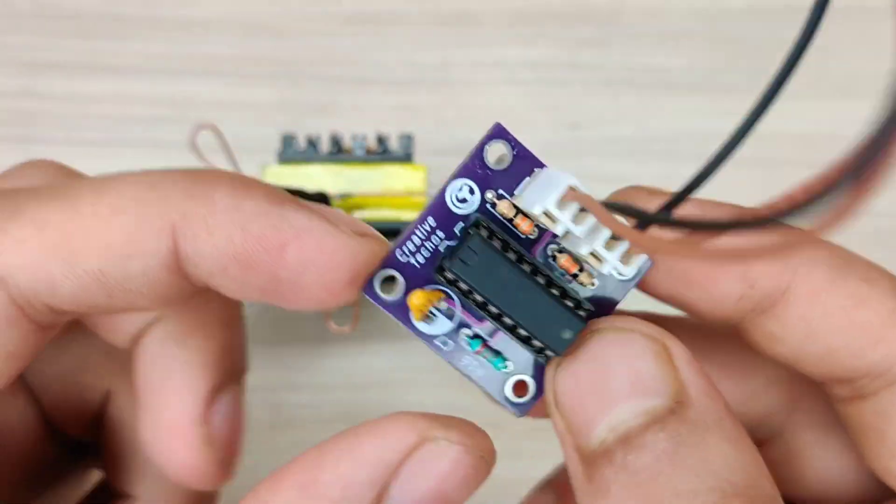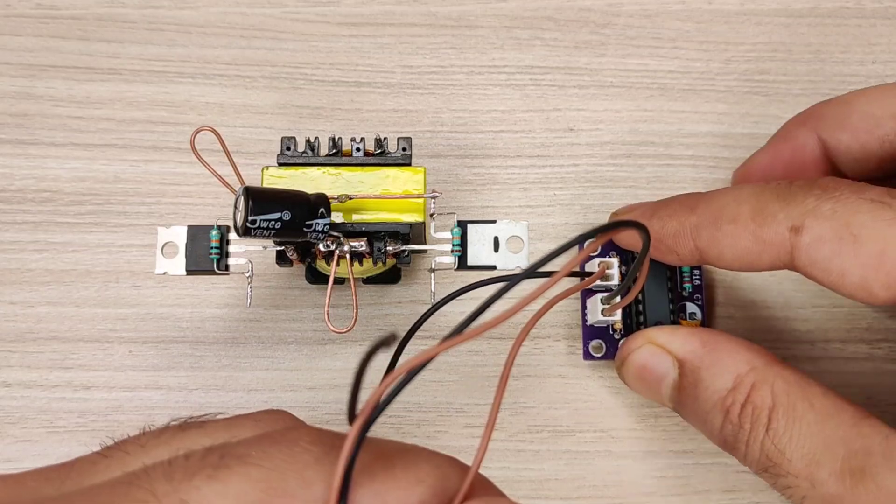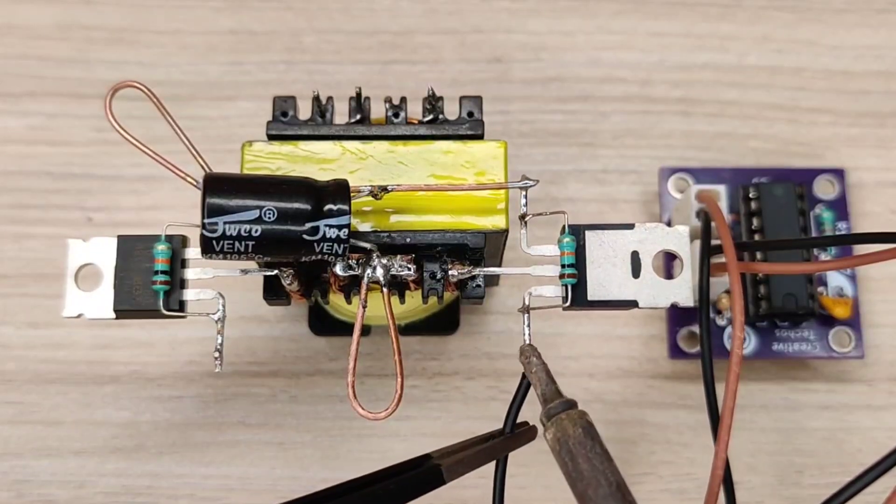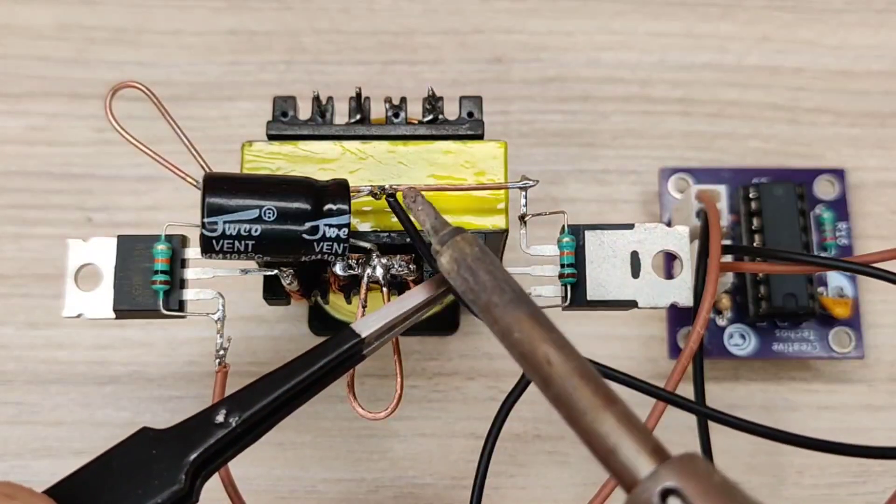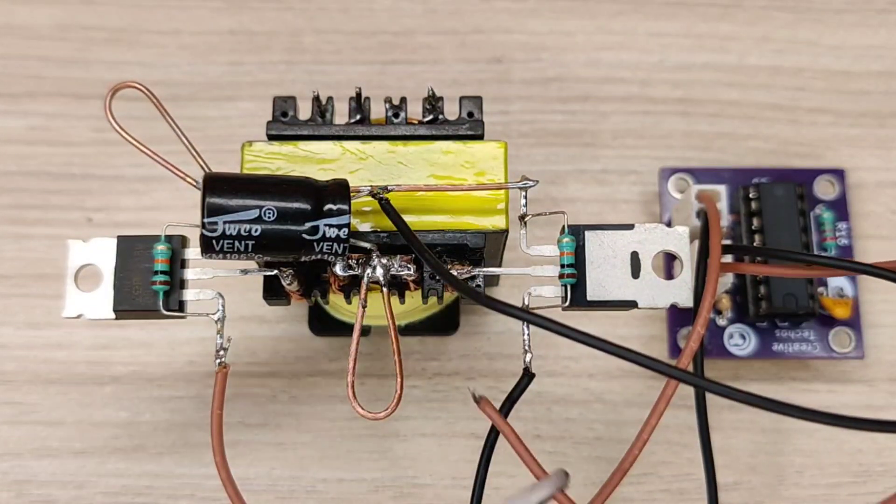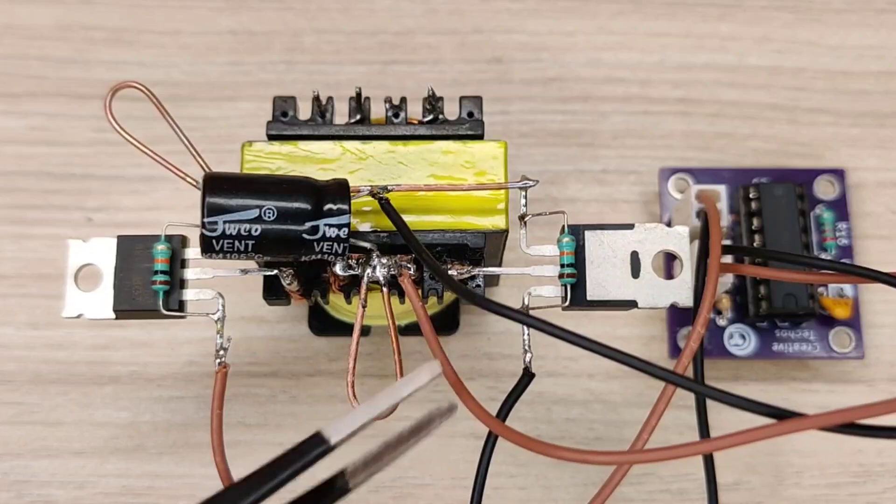Now it's time to connect this oscillator circuit with MOSFETs. Connect oscillator output with gate pins of both MOSFETs. Connect the oscillator negative with source of MOSFETs and connect positive with center tap of transformer.